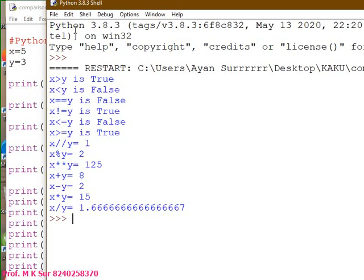So x plus y, x minus y, x star y are simple. Let's come to the last line x divided y. What did I say, that it showed answer in fractional part, that means 1.66.